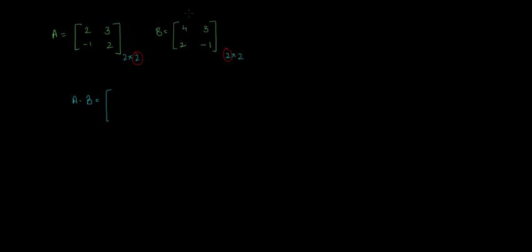A times B would be like this. A's first row and B's first column: 2 multiplied by 4 is 8, and 3 multiplied by 2 is 6, so I will get 14. Moving on, my next element would be first row multiplied by second column. So 2 multiplied by 3 is 6, 3 multiplied by minus 1 is minus 3, so 6 minus 3 is 3.